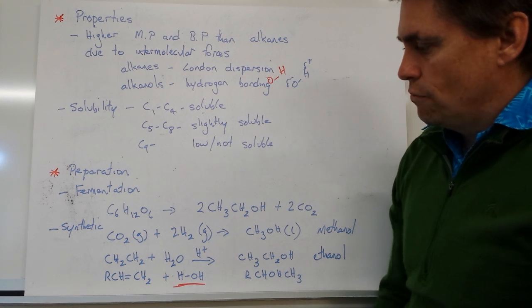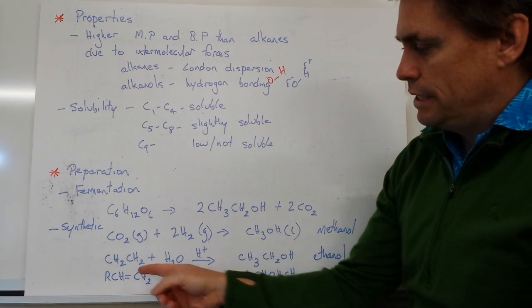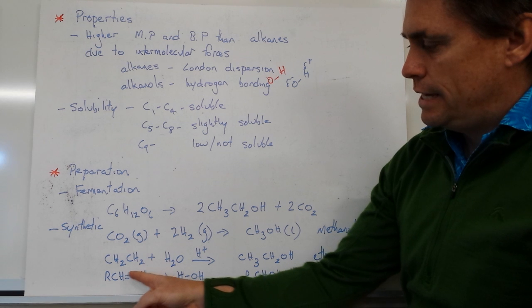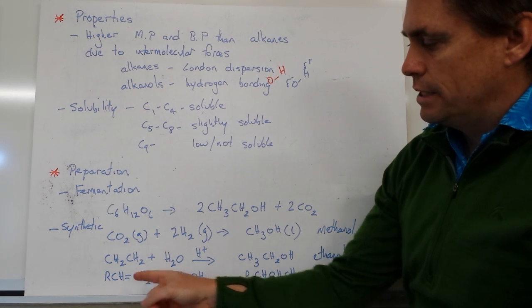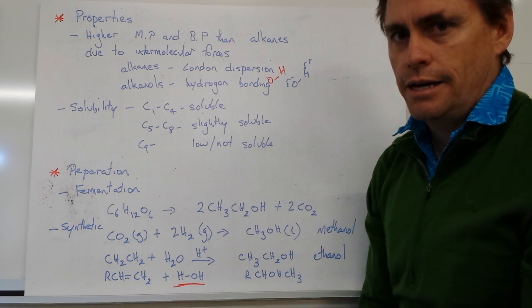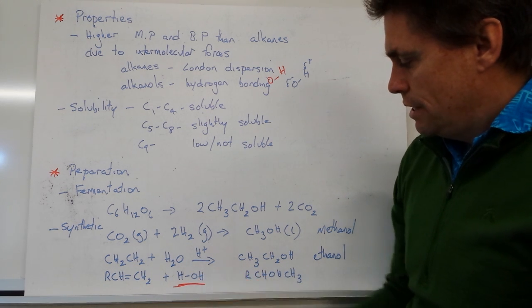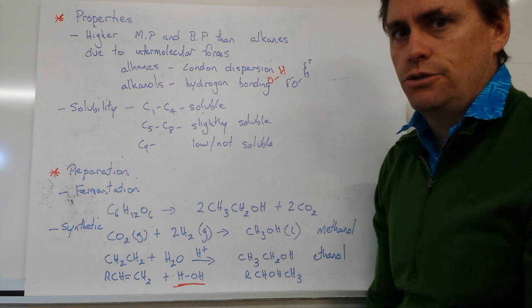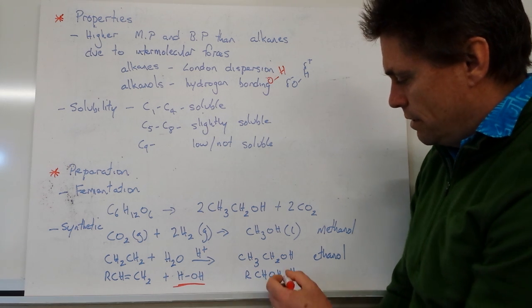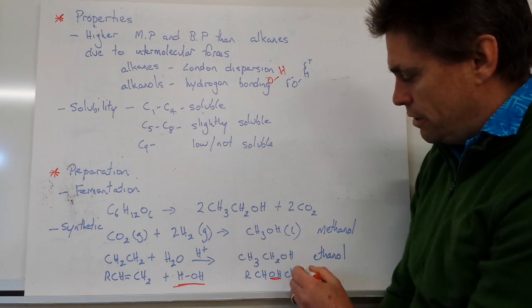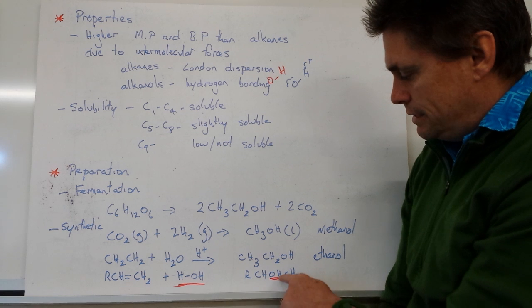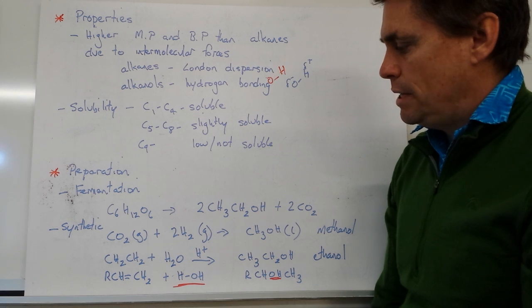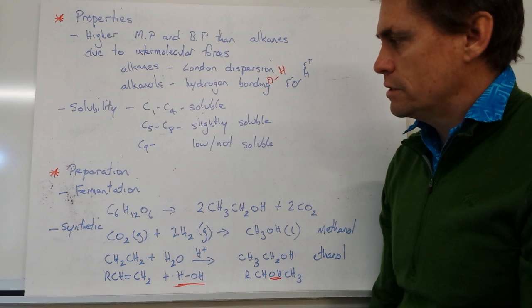We can write the generalized version of this particular reaction by putting our R, so this is a terminal CH2 to carbon double bond attached to another R group. We add our water to it and we form our alkanol. Now if we notice, this has to follow Markovnikov's rule, so our hydroxy group isn't going to be a terminal hydroxy group. Instead we're going to produce it on the second carbon. That's important because it's much easier to produce secondary alcohols than primary alcohols.